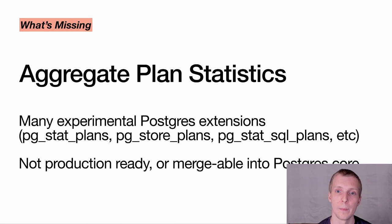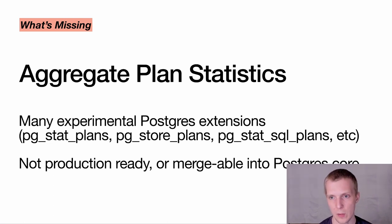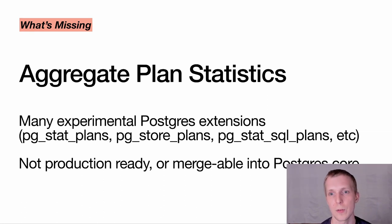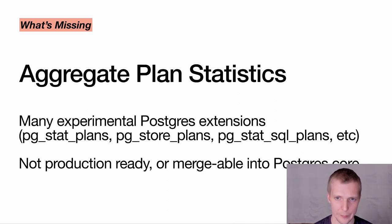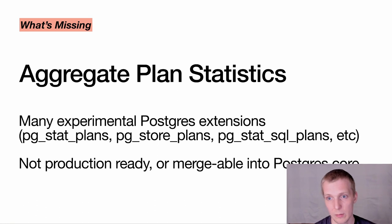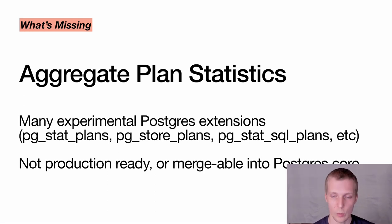There's also pg_store_plans, built at NTT in Japan, which built an interesting extension for looking at plan information on an aggregate basis — but unfortunately it's not been maintained for the last couple of years, so I wouldn't use it in production. More recently there have been efforts to bring this into Postgres core, including an extension called pg_stat_SQL_plans. But none of these are production-ready, and none are mergeable into core. To add to this, none of the cloud providers today offer any of these extensions — so if you run your database on a database-as-a-service provider, you couldn't use them anyway.